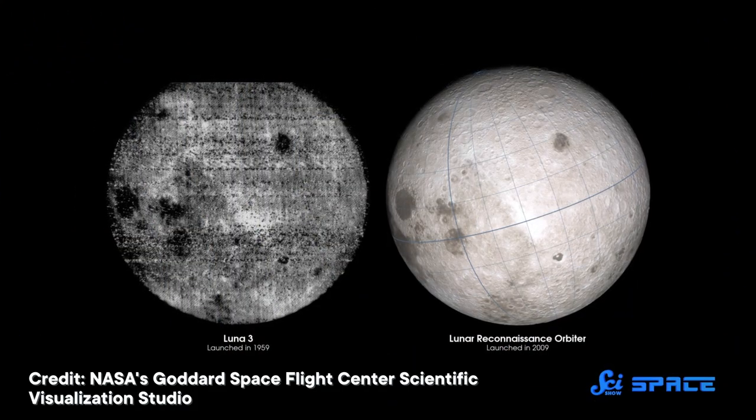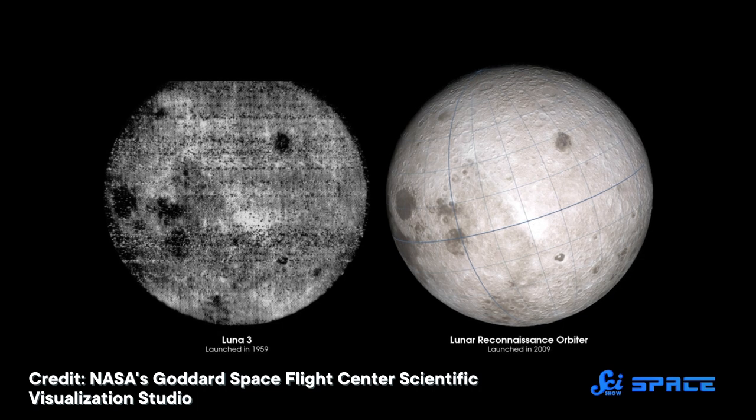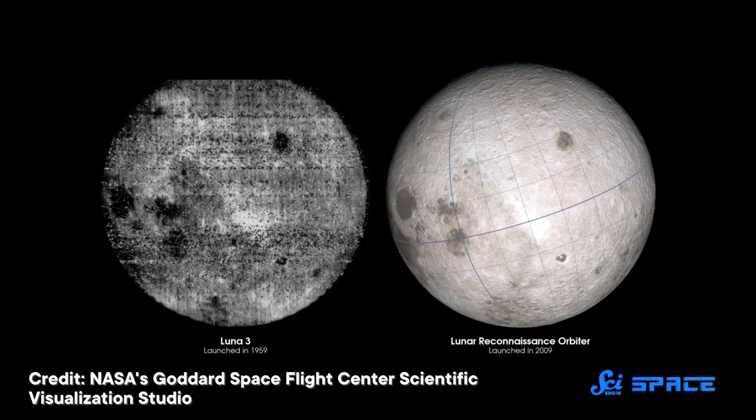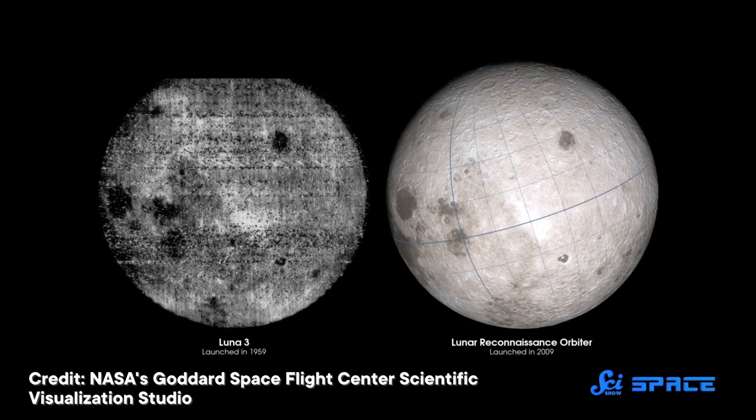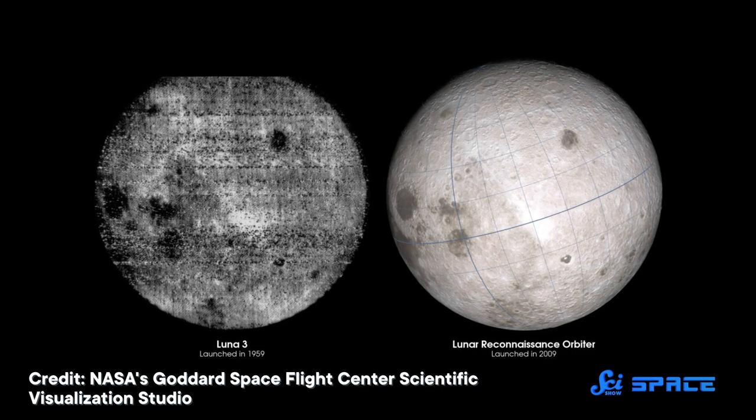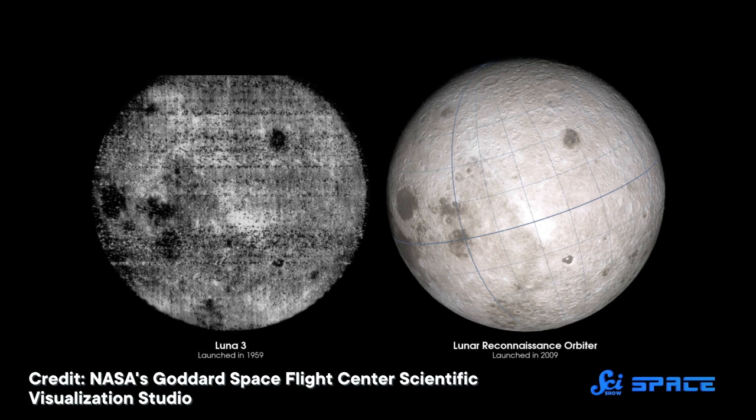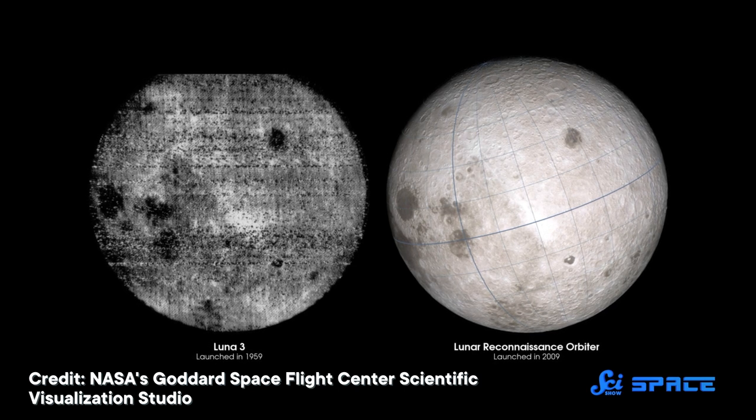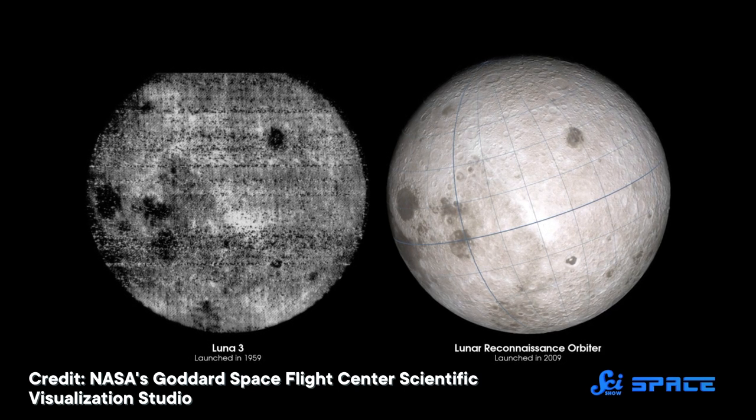While we might not have gotten a complete picture of 100% of the dark side of the Moon, those first images told us that the far side of the Moon is full of craters of all sizes. This isn't how the near side of the Moon looks at all, so it was an important step in learning more about our Moon's history.